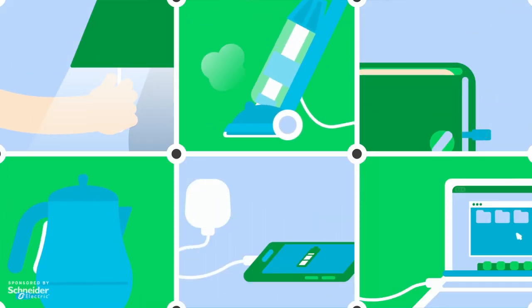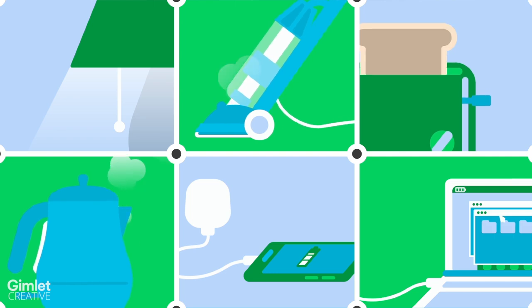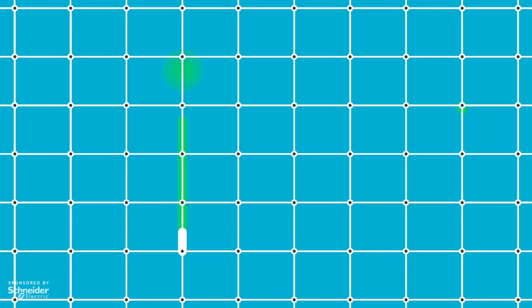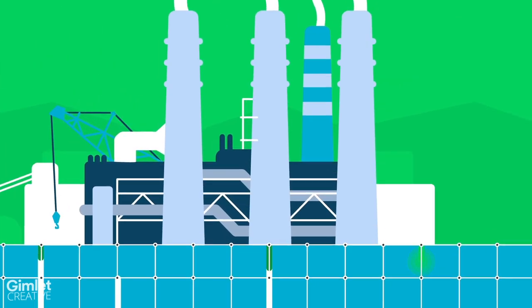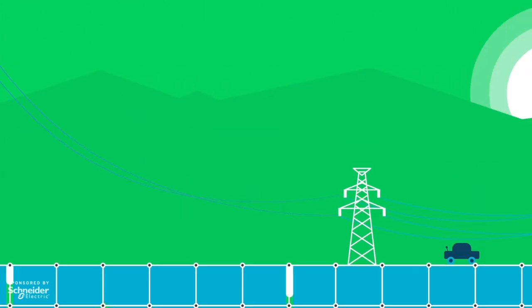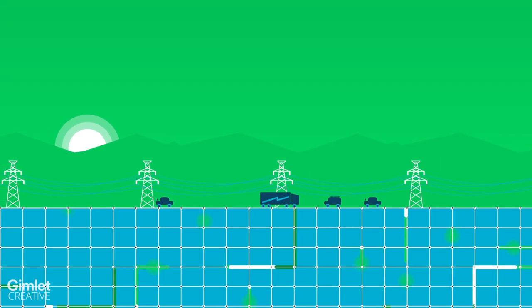We get most of the electricity that powers our cities and homes from one place, the power grid. The power grid is a complex network that includes power plants and transformers, and it has hundreds of thousands of miles of high-voltage transmission lines.